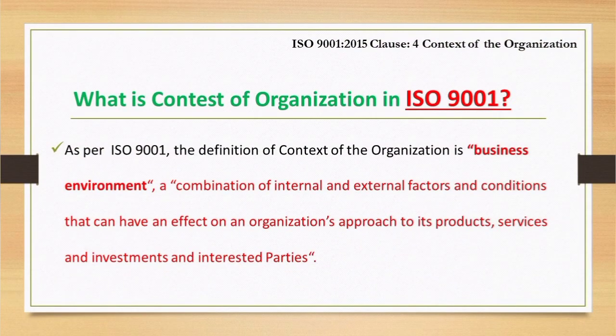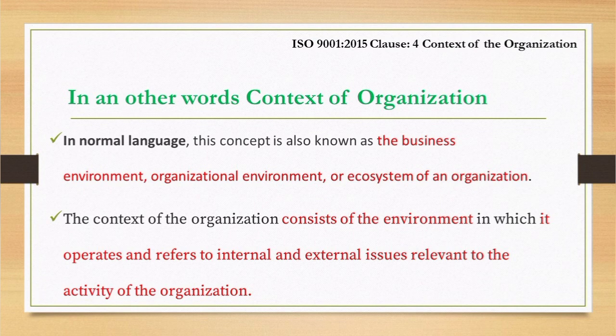Now let's see the definition in ISO 9001. As per ISO 9001, the definition of context of the organization is: business environment — a combination of internal and external factors and conditions that can have an effect on an organization's approach to its products, services, investments, and interested parties. In other words, context of the organization is also known as business environment, organizational environment, or the ecosystem of the organization.